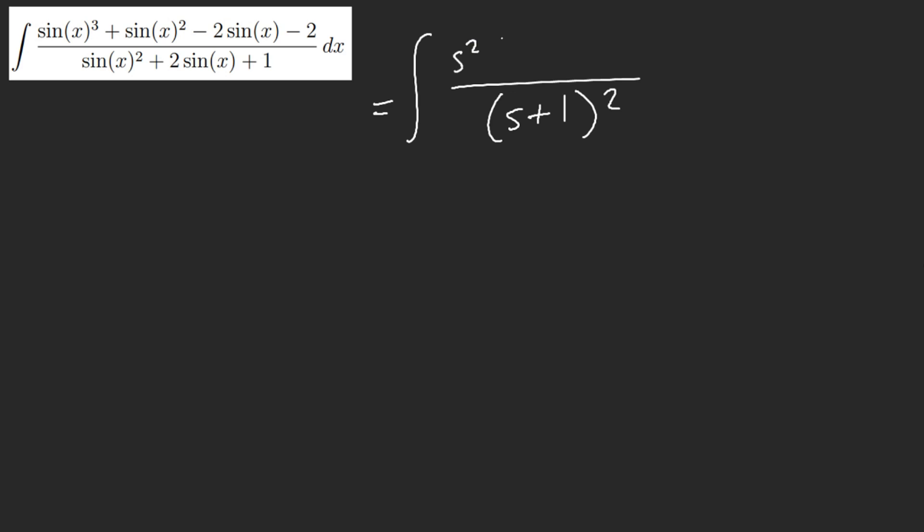I noticed that we have sine of x plus 1 squared. Okay, nice. What's next? Let's see, we have s squared s plus 1 here, then minus, I see minus 2 s plus 1 here. We can notice that we can factor out s plus 1.